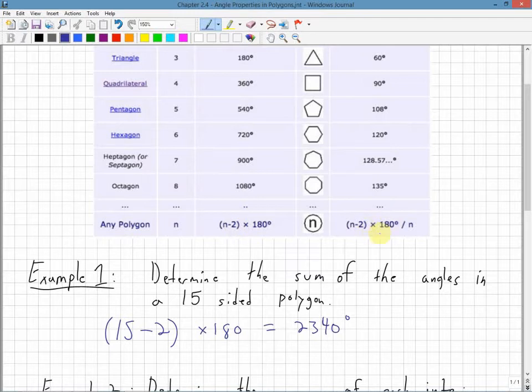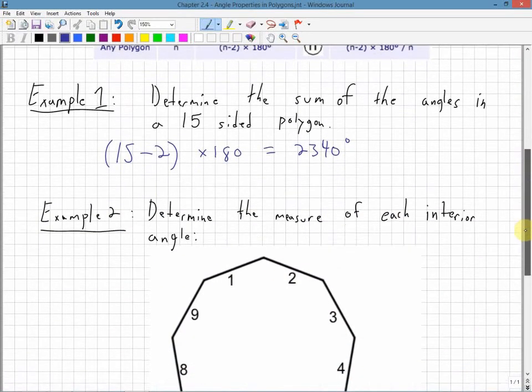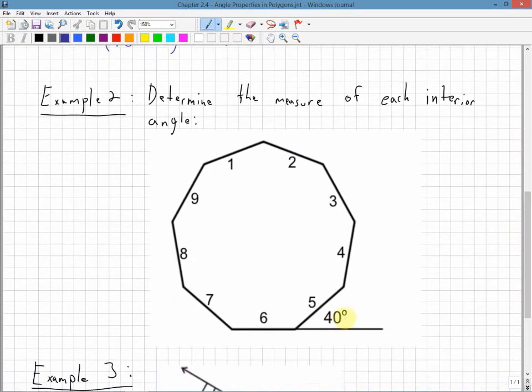Then I can find the measurement of each angle by doing the same formula as the first one, n minus two times 180. That gives me the sum of every angle, and then just divide by how many sides there are. So n minus two times 180 divided by n, the number of sides that there are.